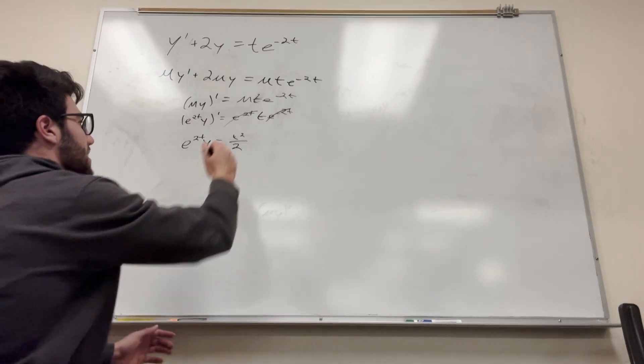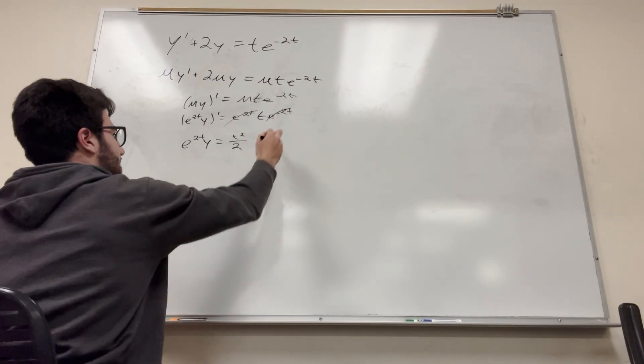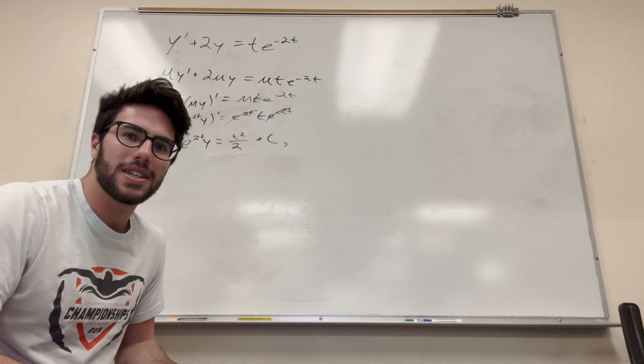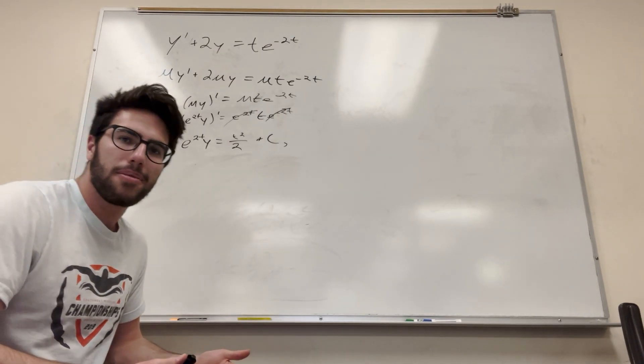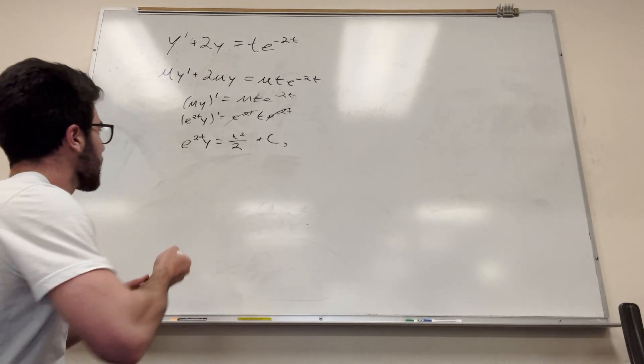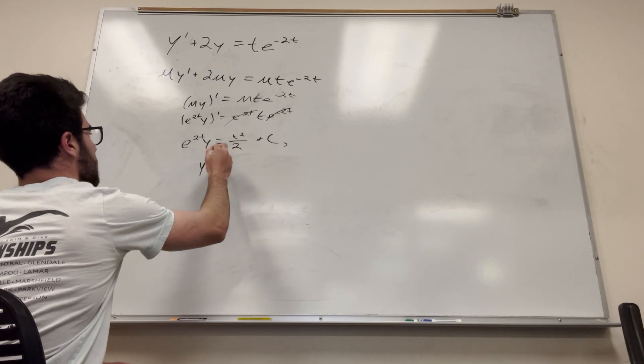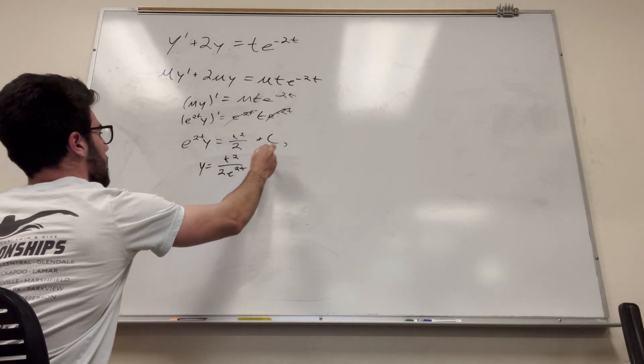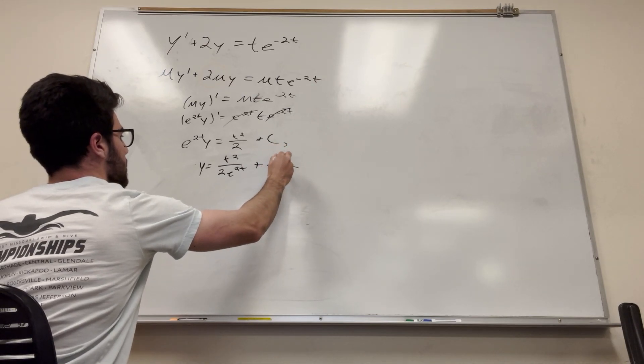And then what we're going to do is divide by e to the 2t on both sides. I forgot something. Plus c. Of course, don't want to forget the plus c. So the next step in solving this is just going to be divide by e to the 2t from both sides. So y is equal to t squared over 2 e to the negative 2t plus c over e to the 2t.